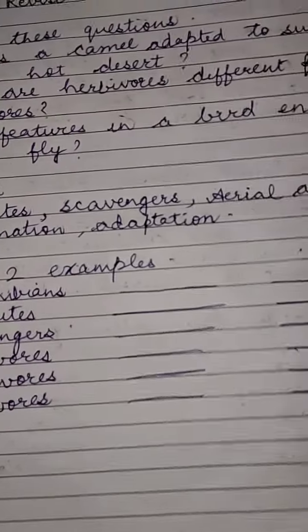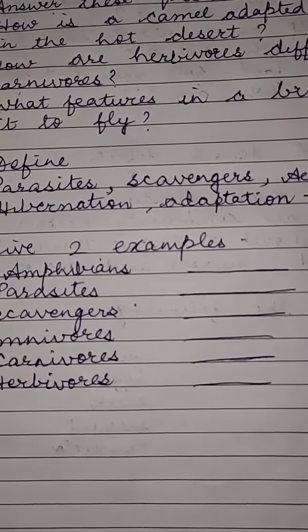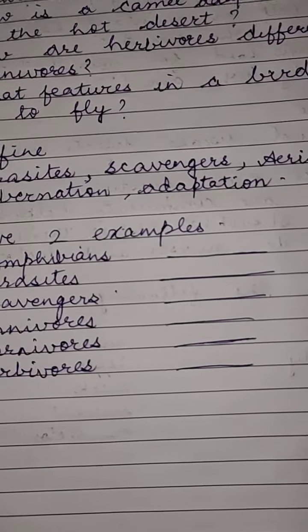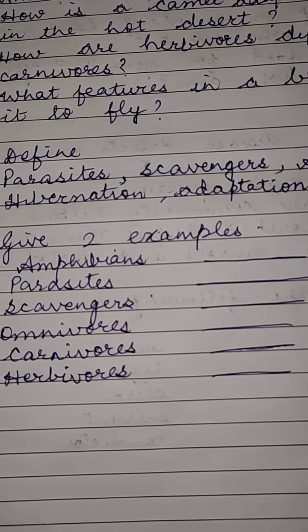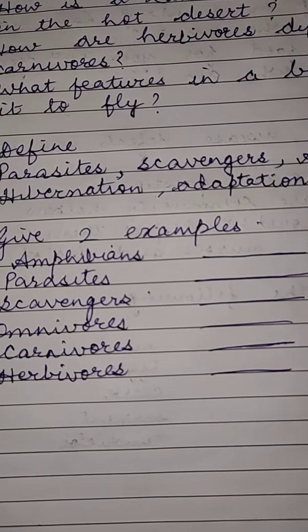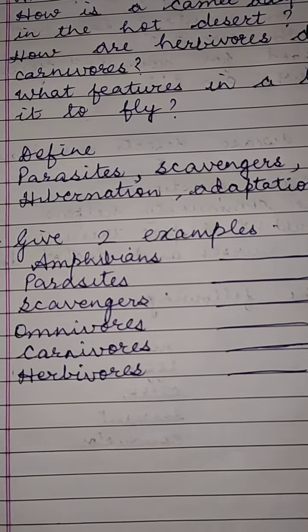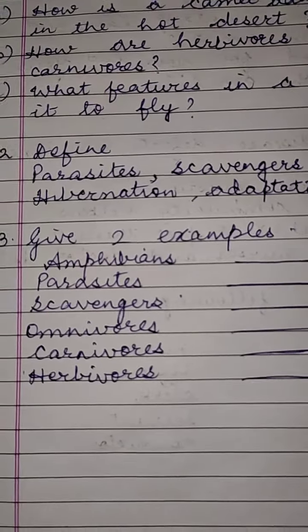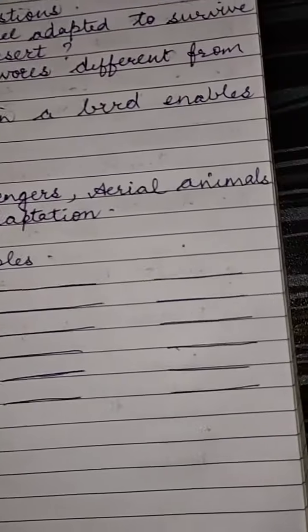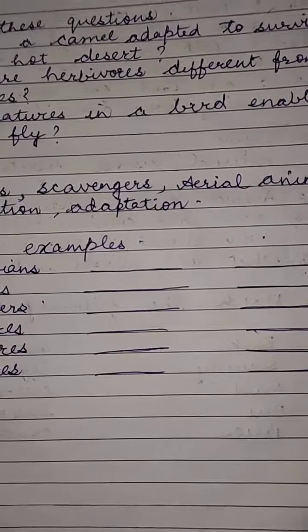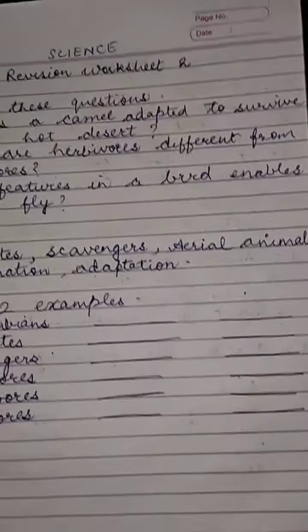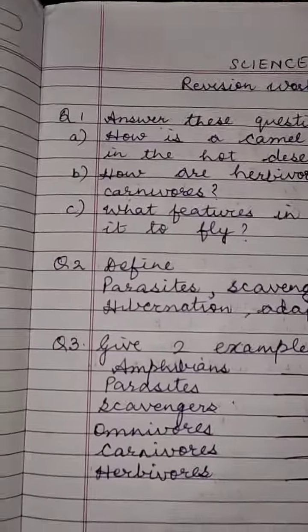Give 2 examples of each of these: amphibians, parasites, scavengers, omnivores, carnivores, and herbivores. Blanks are given, and in these blanks you need to write the answers.